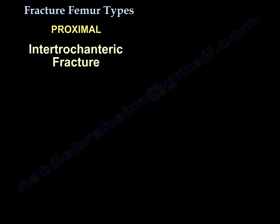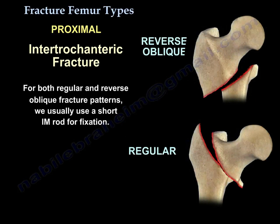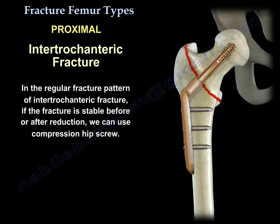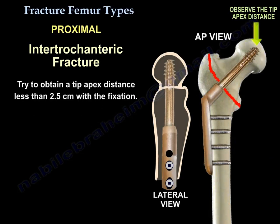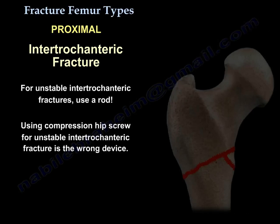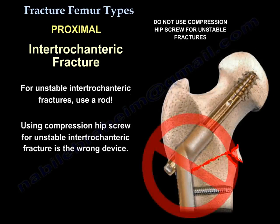For both patterns we usually use a short intramedullary rod for fixation. In the regular pattern of intertrochanteric fracture, if the fracture is stable before or after reduction, you can use a compression hip screw — try to obtain a tip-apex distance less than 2.5 centimeters. If unstable, use a rod; using a compression hip screw in that case is the wrong device.